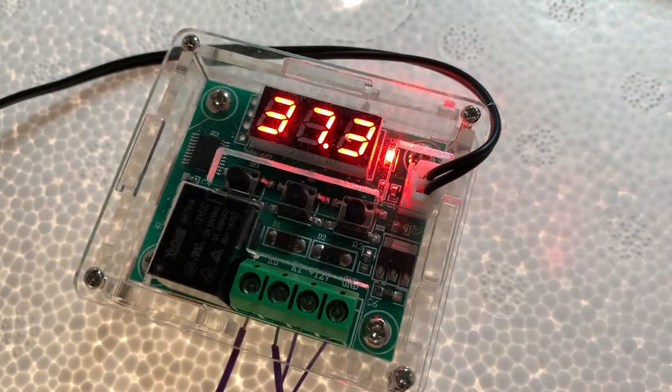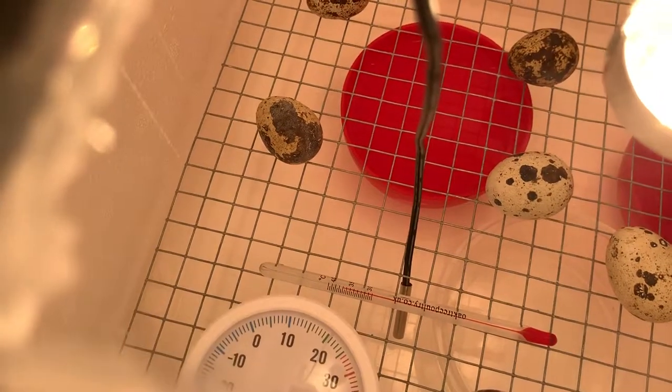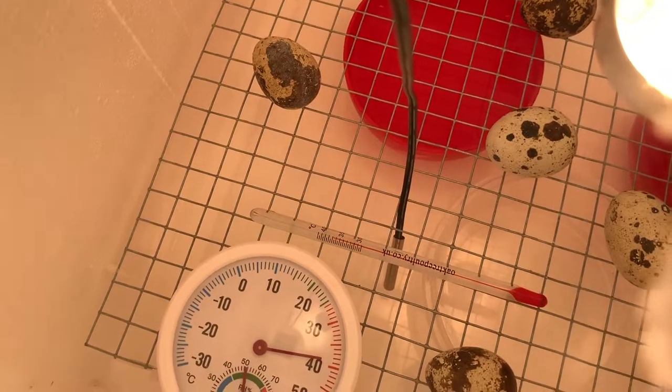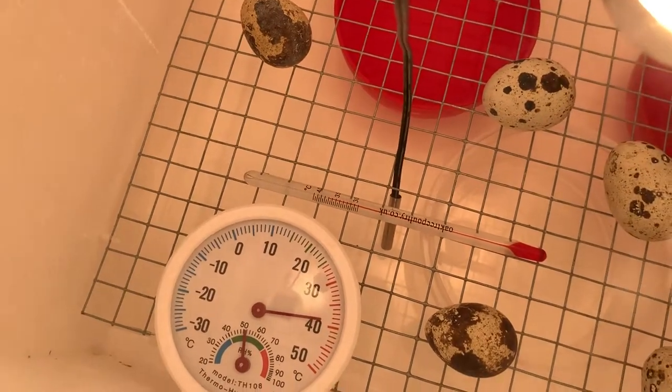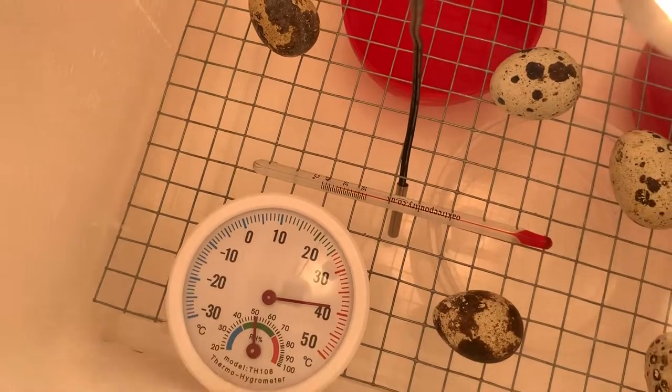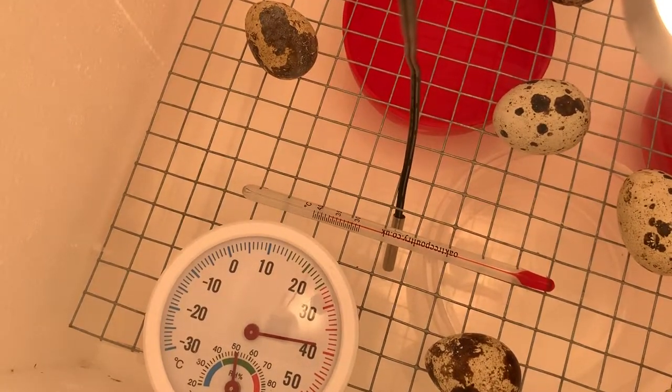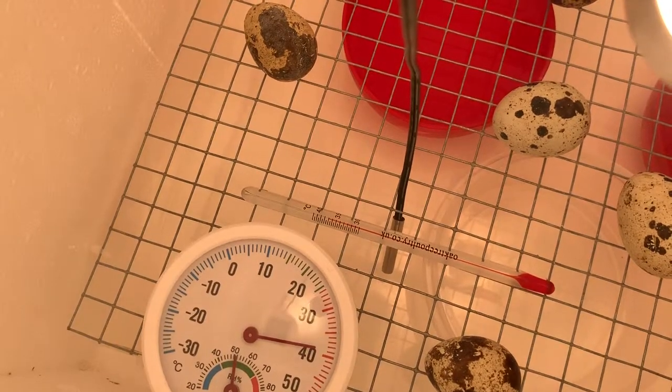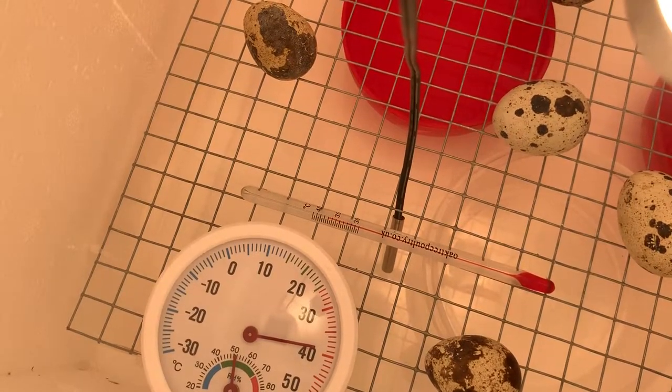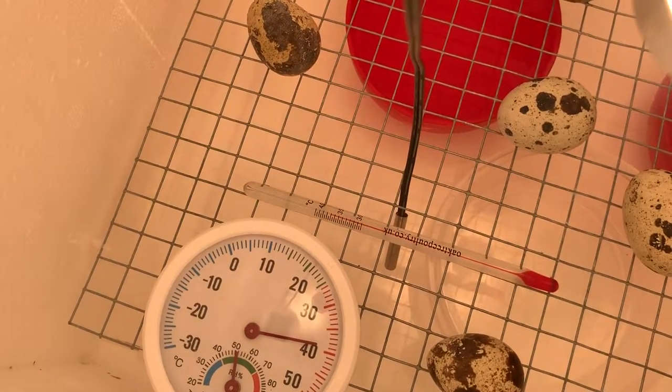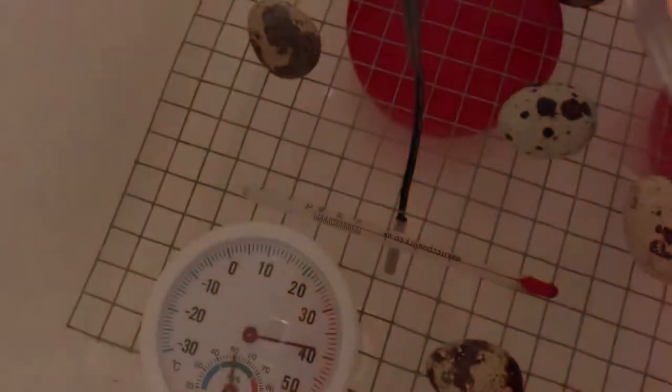I'll just give you a quick look in here. There's the quail eggs in there. You can see the probe from the thermostat and a couple of other thermometers in here just for a bit more accuracy. I did calibrate the thermostat in ice water to zero degrees and in boiling water. It's pretty accurate, not 100% but 99% accurate.